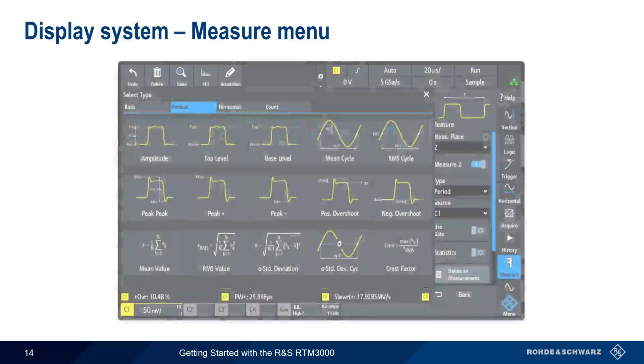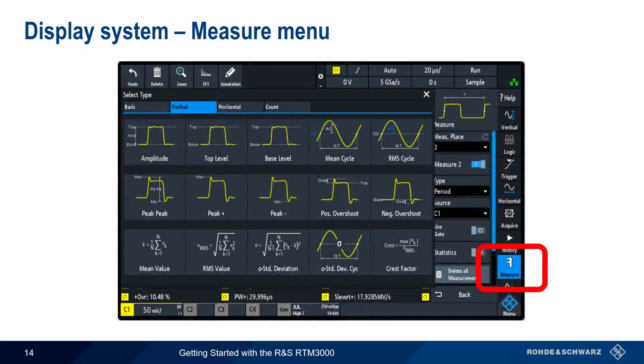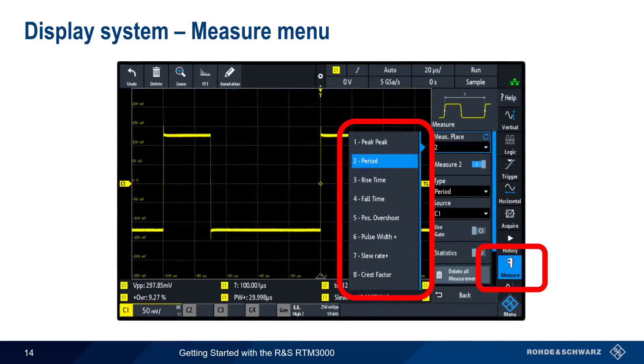On the RTM3000, there's also a measure menu, which enables an enormous range of automated measurement types in four different categories. Up to eight of these measurements can be selected and displayed at any one time. In many cases, this provides a substantial improvement over manual or marker-based measurement.